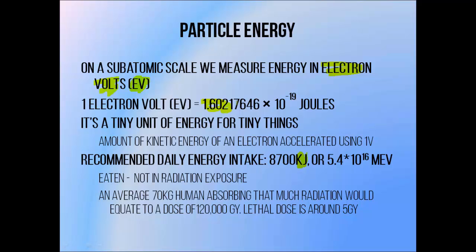One electron volt is equal to 1.6 times 10 to the negative 19 joules. The reason that it's such a messy number rather than a straight multiple of joules is that it's the amount of kinetic energy that will be gained by an electron if it was accelerated using an electrical field of one volt. This unit is way, way smaller than the joule. If you convert your recommended daily food energy intake into electron volts, you get a figure of 54 million million billion electron volts, which is a massive number.